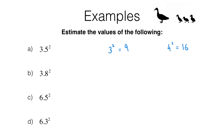You might be tempted to say that 3.5 squared is going to be exactly halfway between 9 and 16, because 3.5 is exactly halfway between 3 and 4. Unfortunately that's not true, though it is approximately true when dealing with consecutive numbers. We're just going to look for something roughly halfway between these two — so something in the region of 12 or 13. I'll write 3.5 squared is approximately equal to 12, using the squiggly equal sign to show the answer is only an estimate.